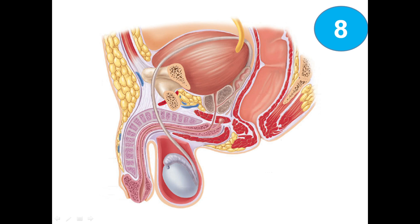Here we see a midsagittal section of the male reproductive system. First of all, we identify the testis. Around the testis we have the scrotum. This worm-like structure is called the epididymis. This duct is known as the ductus deferens, also called the vas deferens.